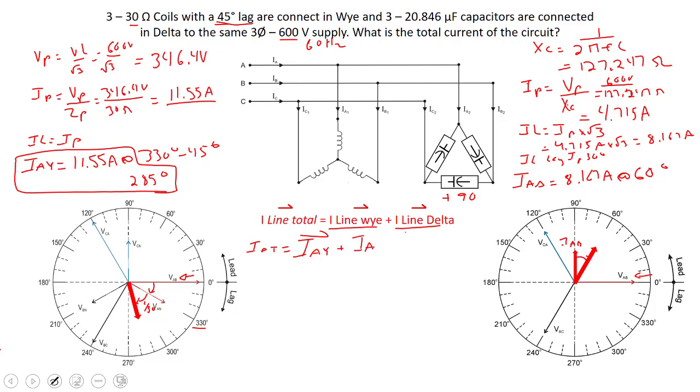So we've got 11.55 amps at 285 degrees plus 8.167 amps at 60 degrees.